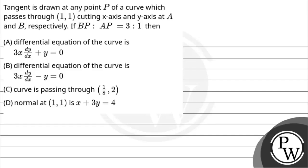Hello, let's get into the questions. The question says: tangent is drawn at any point P of a curve which passes through (1,1), cutting x-axis and y-axis at A and B respectively. If BP is to AP as 3:1, then...